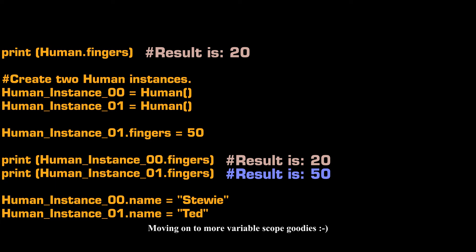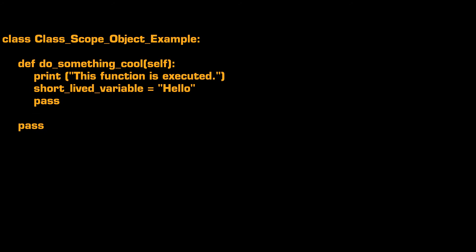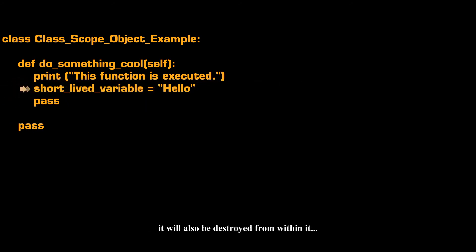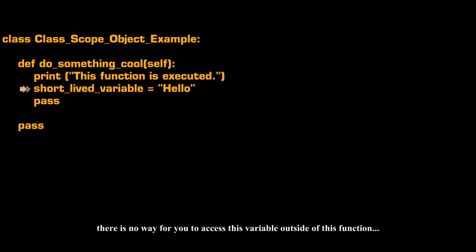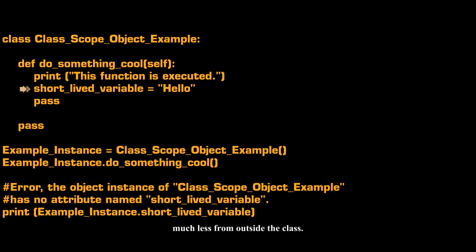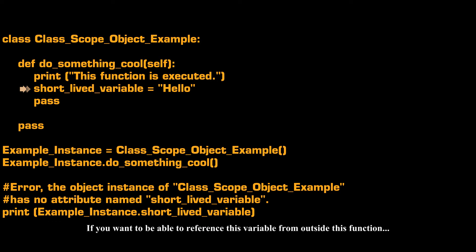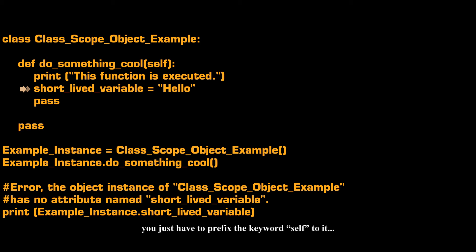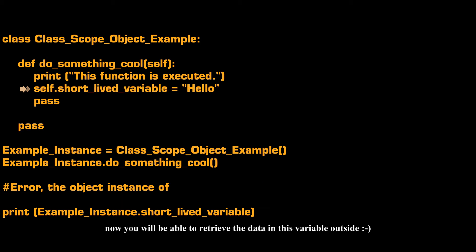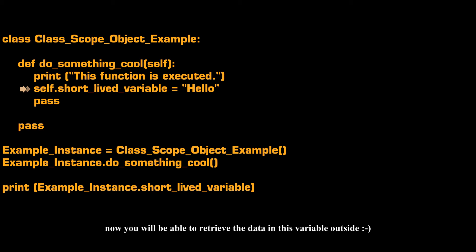Moving on to more variable scope. Take a good look at this code. This variable was created in this function and will also be destroyed from within it. There is no way for you to access this variable outside of this function, much less from outside this class. If you want to be able to reference this variable from outside the function or even outside the class, you just have to prefix the keyword self to it. Now you will be able to retrieve the data in this variable from outside.